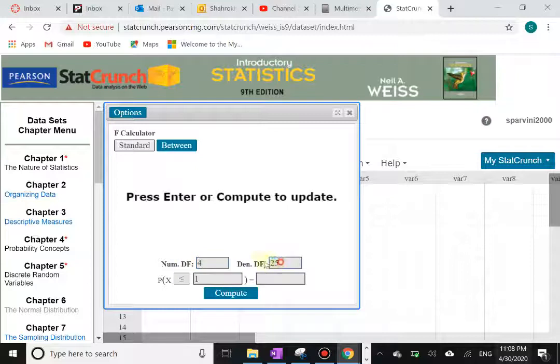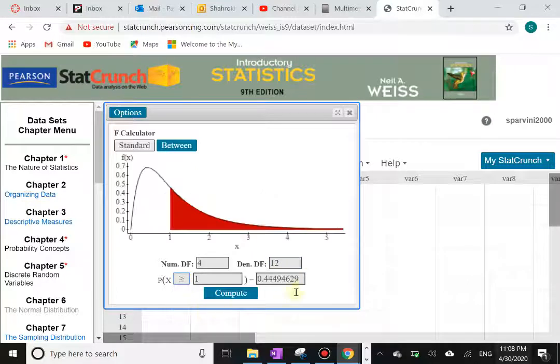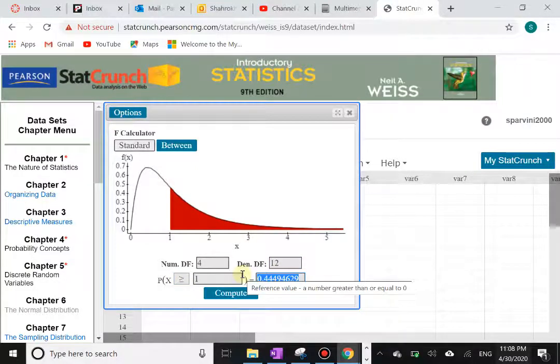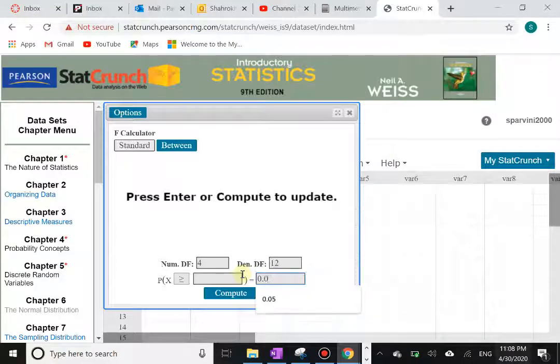We're going to put our own 4 and 12 in here. And we want the area to the right so I'm going to go greater than or equal. And of course the tail area was 0.05.